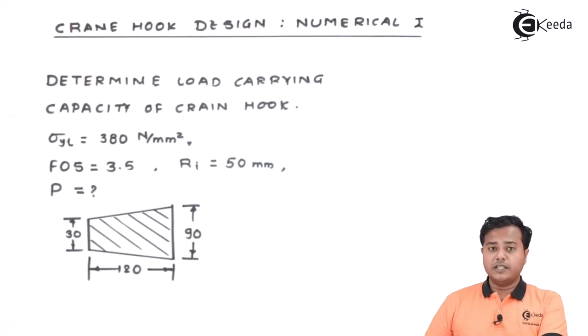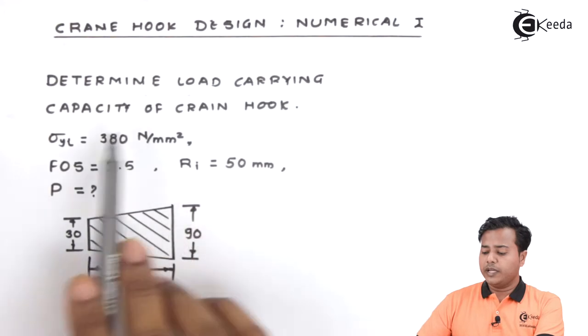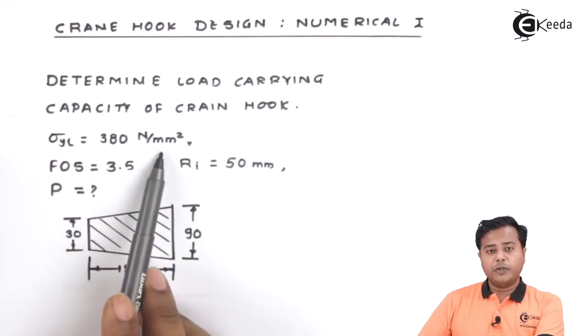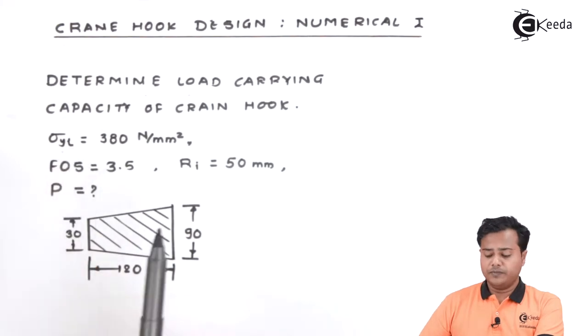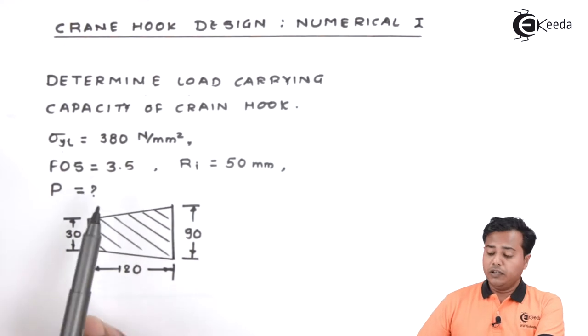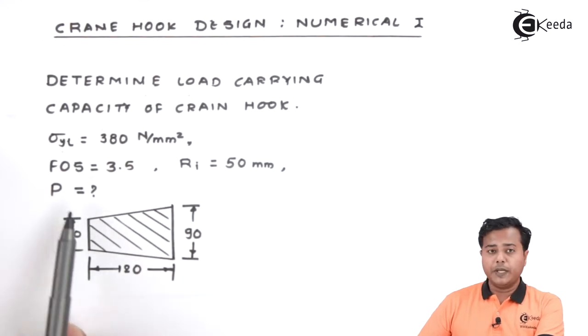Students, the numerical is there on the screen, let's read it out and try to understand the numerical. It says that, determine load carrying capacity of the crane hook. Its metal property, the yield stress is given, factor of safety is mentioned and the inside radius is also mentioned.